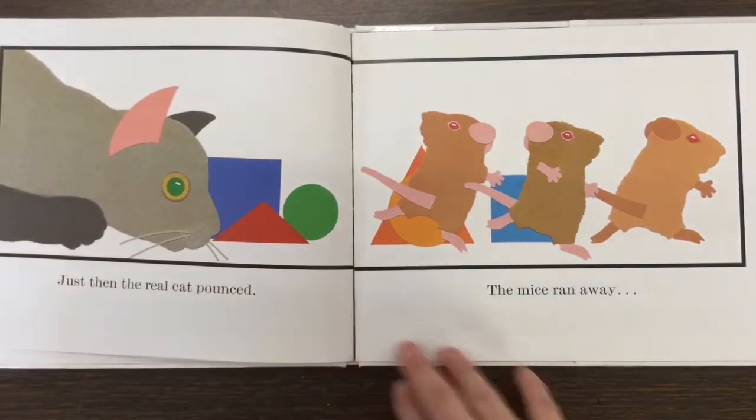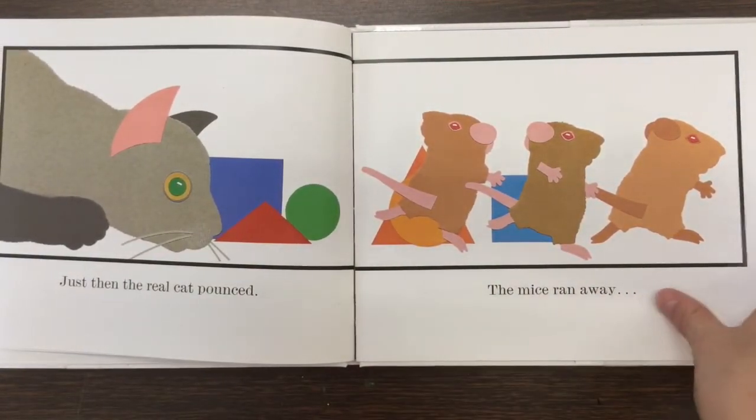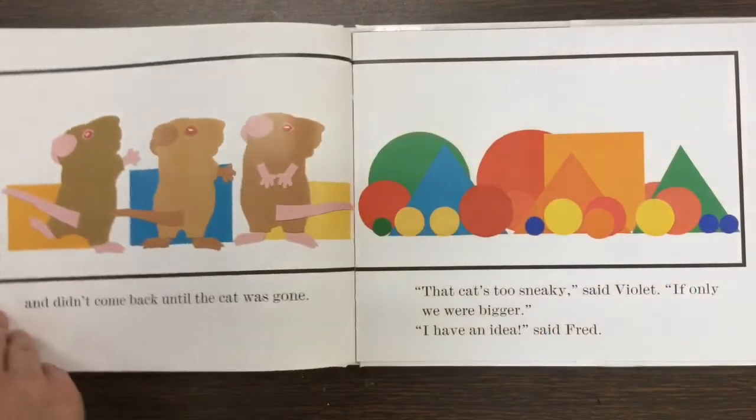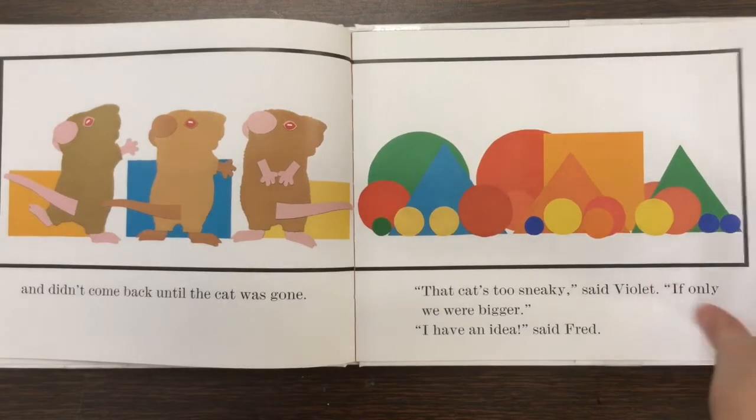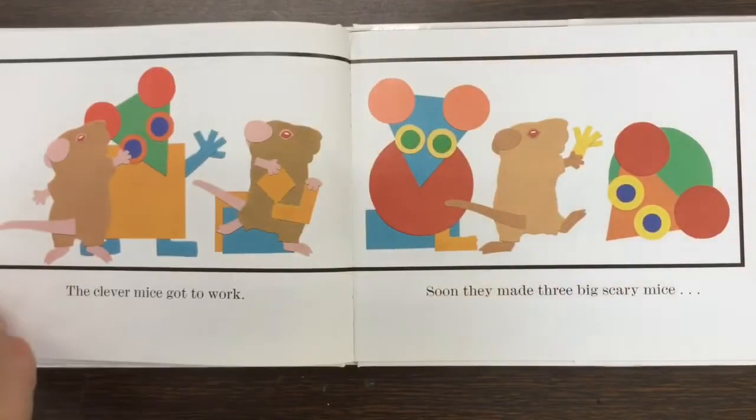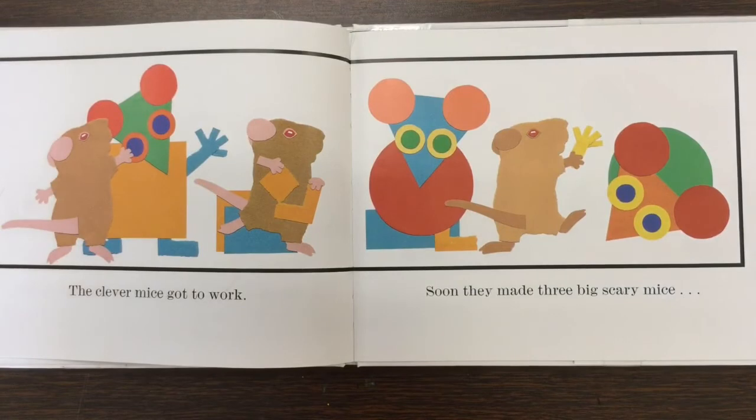Just then, the real cat pounced. The mice ran away. And didn't come back until the cat was gone. That cat's too sneaky, said Violet. If only we were bigger. I have an idea, said Fred. The clever mice got to work. Soon, they made three big scary mice.